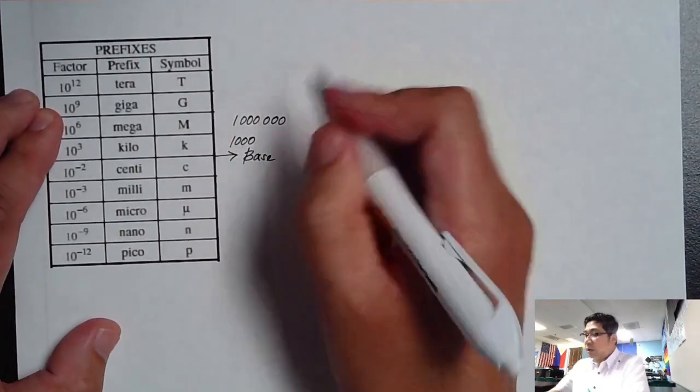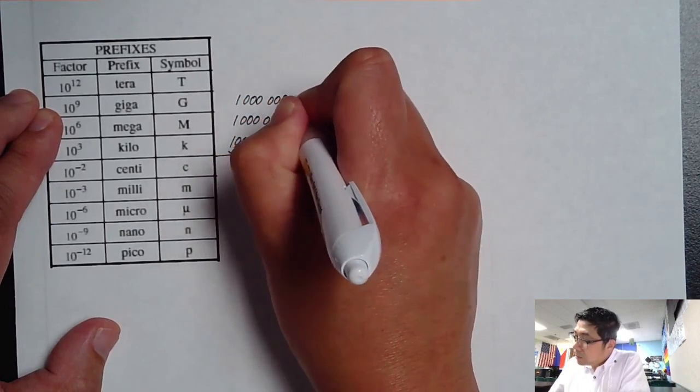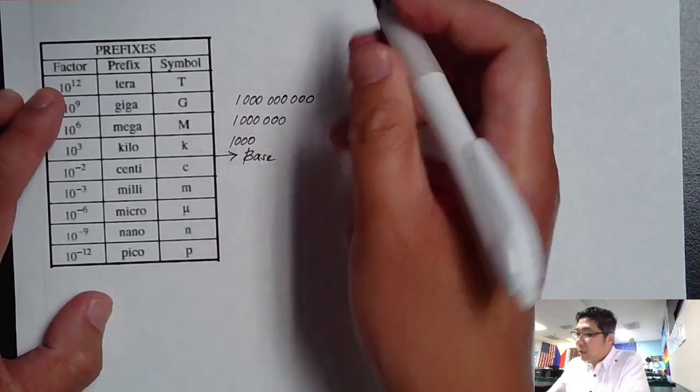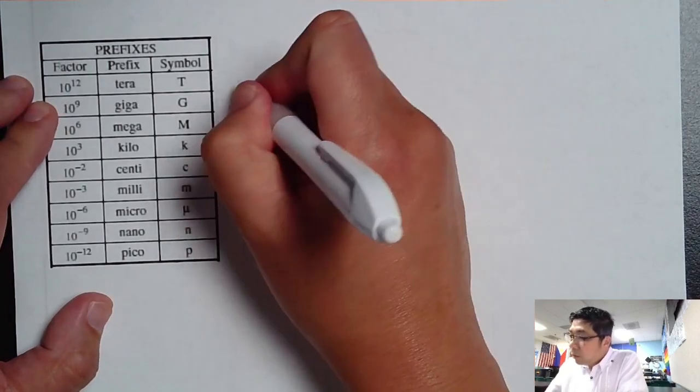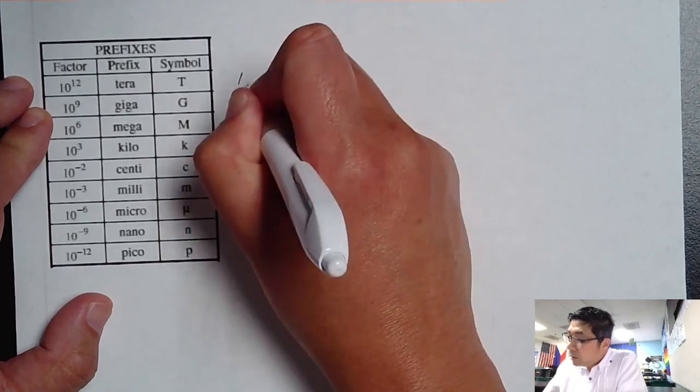And then Giga, there should be nine zeros, gazillion. And then we have the next one, which is our trillion.